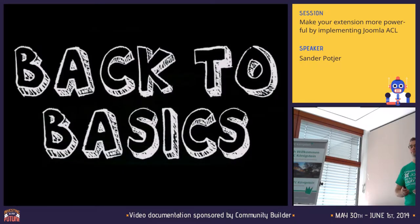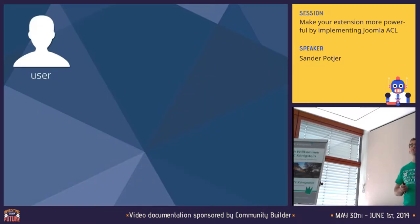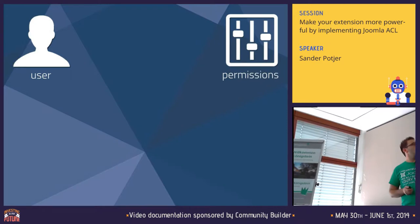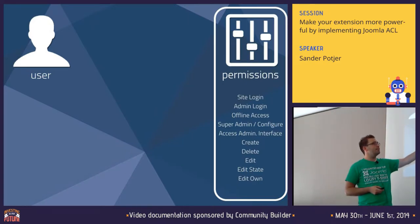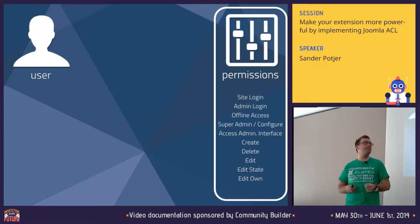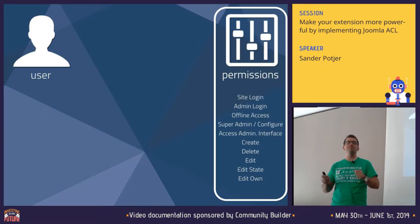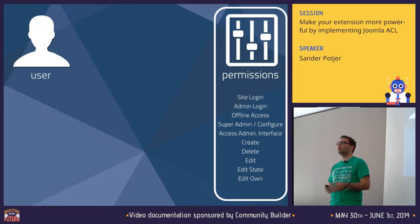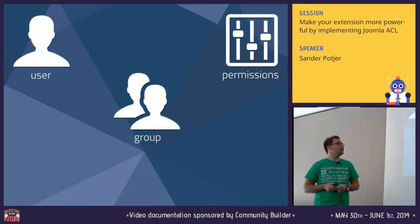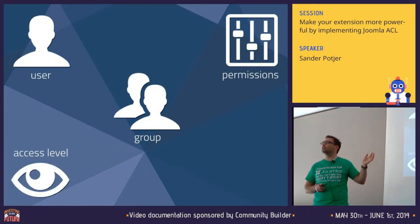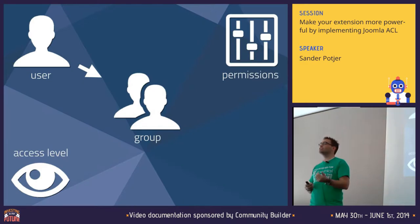Let's get to a couple basics first about the Joomla ACL system. We have the user. We have permissions, and in default we have 10 actions in Joomla: site login, admin login, offline access — basically the login actions. We have super admin and configure. We have the access administration interface. And we have create, delete, edit, edit state, and edit own. Edit state means if you can unpublish, publish something, feature, unfeature — those are the states. In the center of the whole ACL system we have the groups, and we also have the access level — the visibility of content.